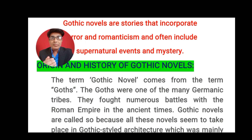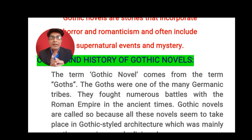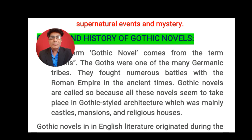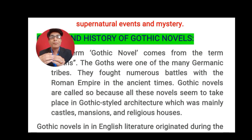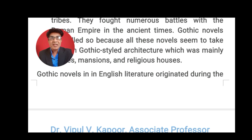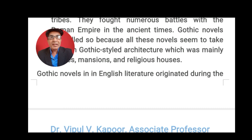Where do we get the term 'Gothic novels'? This term comes from the term 'Goths' — G-O-T-H-S. The Goths were a community who used to live in Europe in ancient times, known as Germanic tribes. These Germanic tribes were among the ancient tribes residing in ancient England and fought many battles with the Roman Empire. These novels are called Gothic novels because their settings are taken from Gothic-style architecture — ancient castles, ancient houses, haunted houses, and some ancient, mysterious religious places.